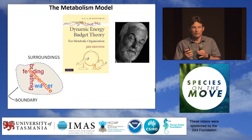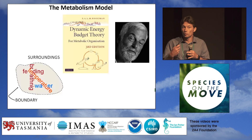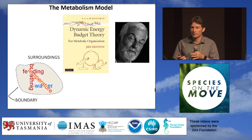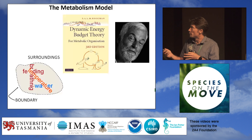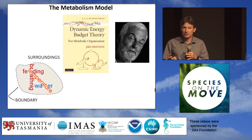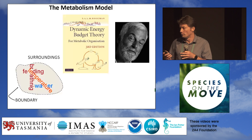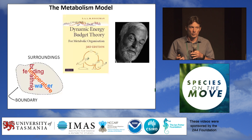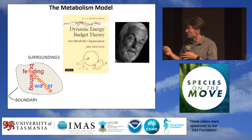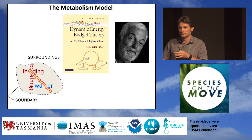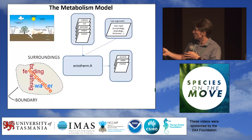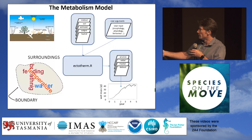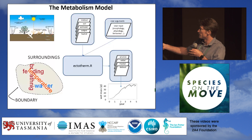That's the ectotherm model calculating the heat and water budget of the organism. But you may want to go further and predict the animal growing, developing, and reproducing in that environment. One of the best ways is Kooijman's Dynamic Energy Budget theory — a very physics-type model of metabolism. I've included that as the on-board energetics model in the ectotherm function. You can optionally turn it on, and if you have the DEB parameters for your species, you'll additionally get a growth trajectory of wet mass through time, showing the animal developing, maturing, and producing reproduction events.